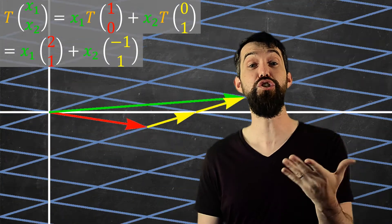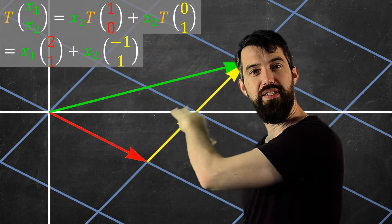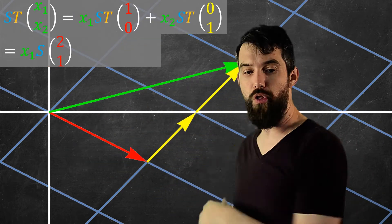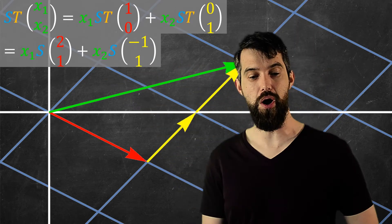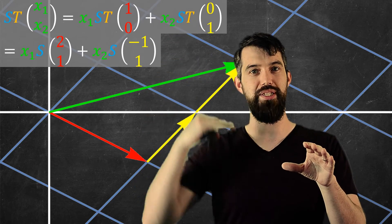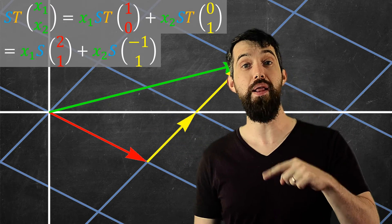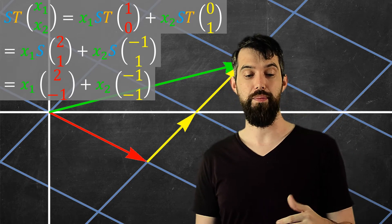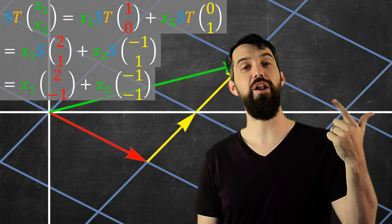Now let me apply the second transformation — visually it looks like this because it's flipping along the y. But algebraically, I have all of this algebra already done, and now I'm applying a new transformation. If the first was called T, I'll call the second one S, so I put an S all the way through. Because of linearity, it does respect these linear combinations. I know S takes a y value to its negative. So 2, 1 goes to 2, minus 1, and minus 1, 1 goes to minus 1, minus 1. This linear combination is what I get after first applying T and then applying S.